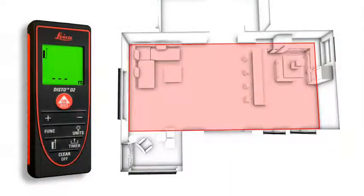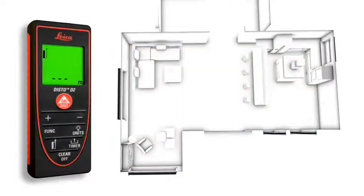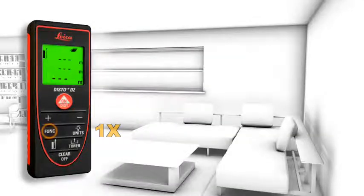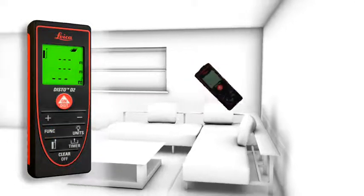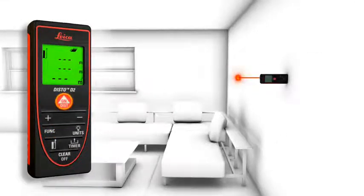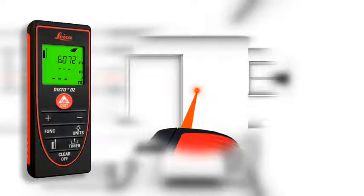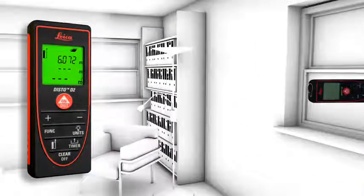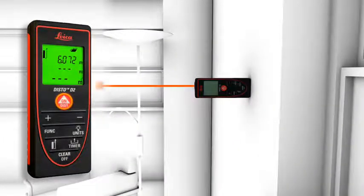Distances and areas can be easily added or subtracted at the touch of a button. This is very useful, for example, if the area of a room should be measured which goes around a corner, or if the total area of different rooms has to be identified.